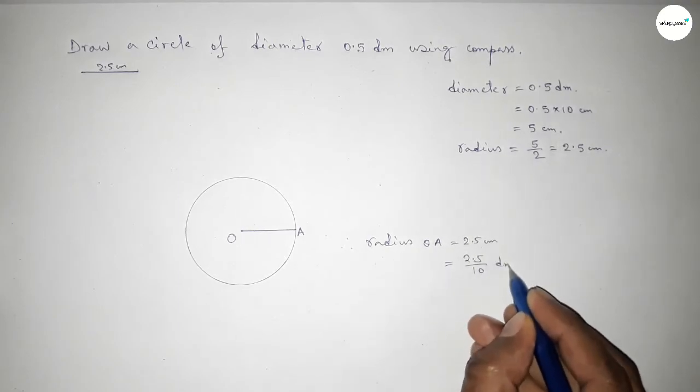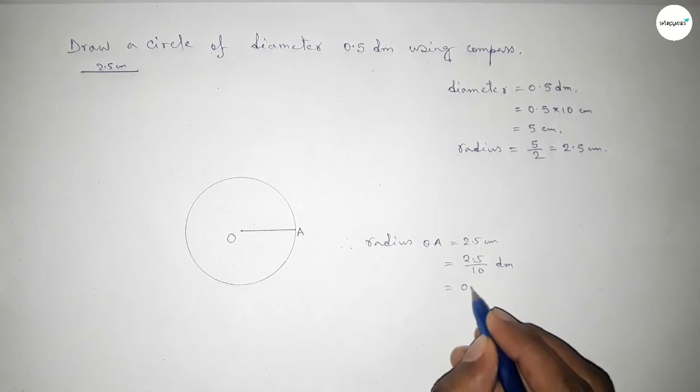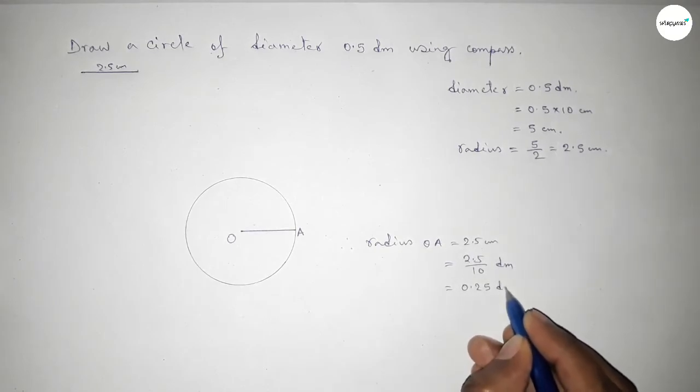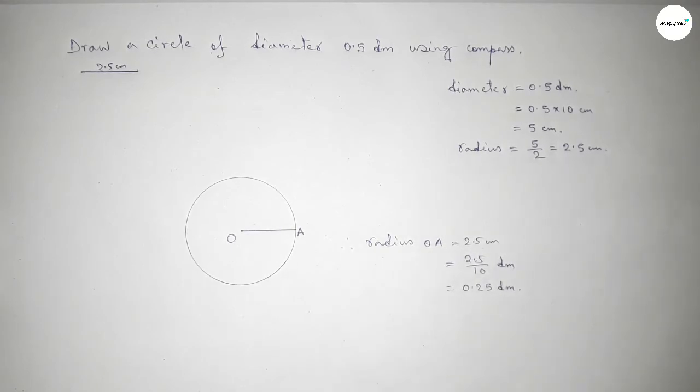Now converting into decimeter, we divide by 10, so this is 0.25 decimeter.